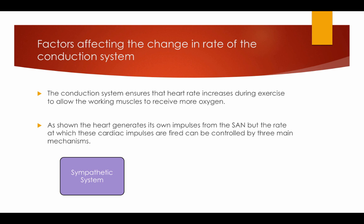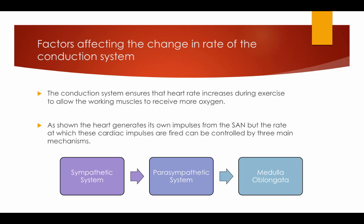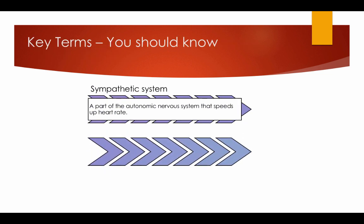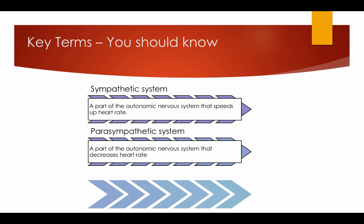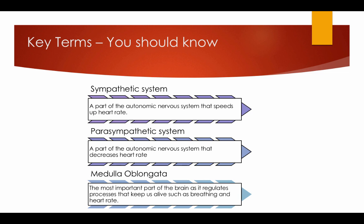The three mechanisms are: the sympathetic system — a part of the autonomic nervous system that speeds up the heart rate; the parasympathetic system — a part of the autonomic nervous system that decreases the heart rate; and the medulla oblongata — the most important part of the brain as it controls the processes that keep us alive, such as breathing and heart rate.